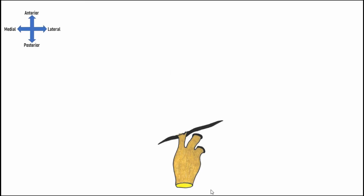The branching of the trigeminal nerve is shown here. We're going to have the trigeminal nerve itself leaving the pons and traveling into the dura. Very shortly thereafter, we have the collection of pseudounipolar cell bodies — sensory cell bodies related to the trigeminal nerve — in the trigeminal ganglion.